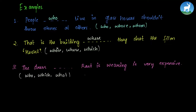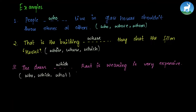'The dress ___ Ravi is wearing is very expensive.' Options: who, which, what. We discard who immediately because we're not talking about a person — we're talking about the dress. We choose which because which is used to talk about animals and things, and a dress is a thing. 'The dress which Ravi is wearing is very expensive.'